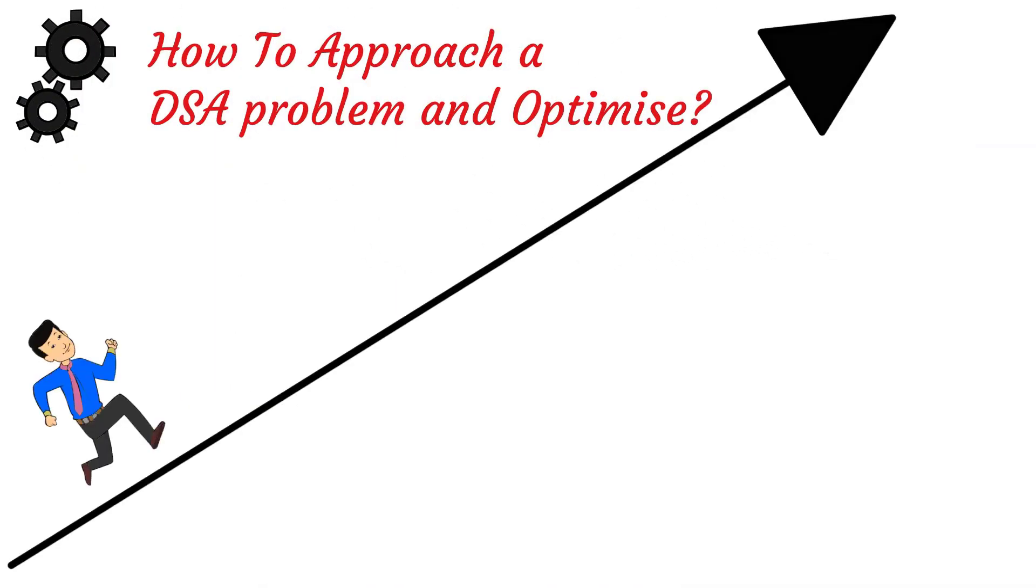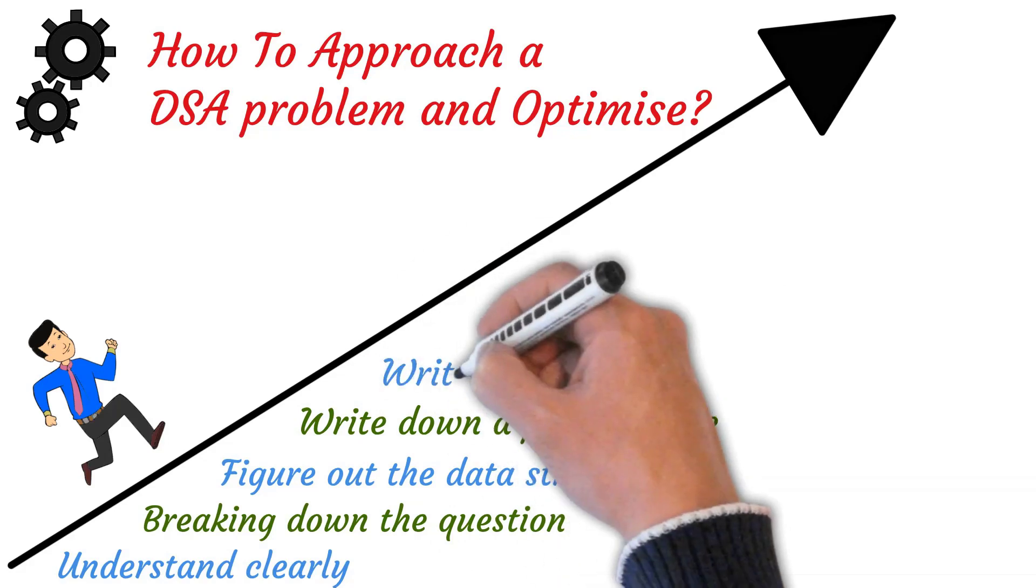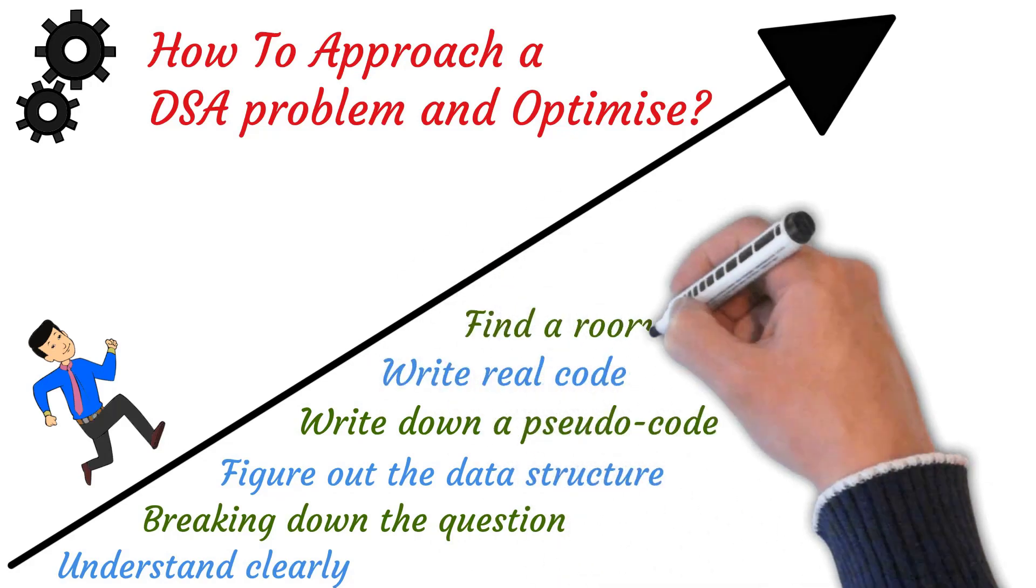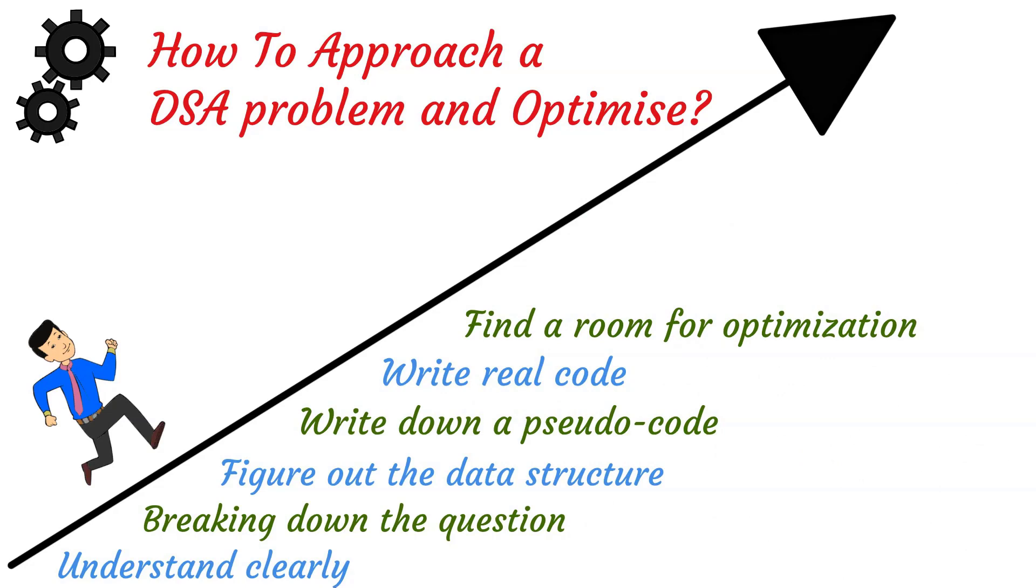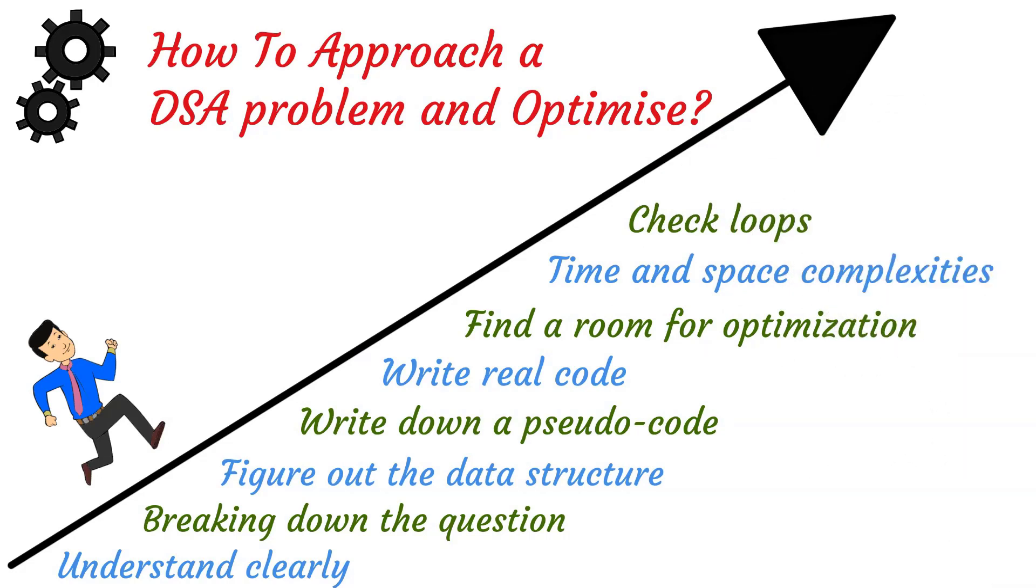Now, coming to the next one, how to approach a DSA problem and optimize. First, give yourself enough time to clearly understand the given question. Now, break down the question. Figure out the data structure you are going to use. Now, write down a pseudocode in simple English. Then replace the pseudocode with real code. Now, try to find room for optimization. Estimate the time and space complexities. Check for any repetitive or unnecessary loops. And check for extra steps or functions you can take out.